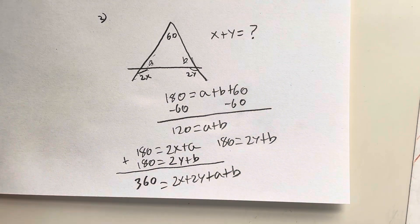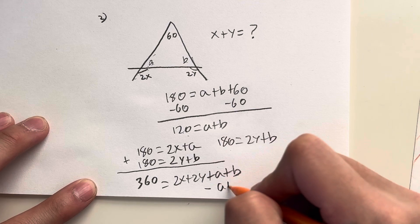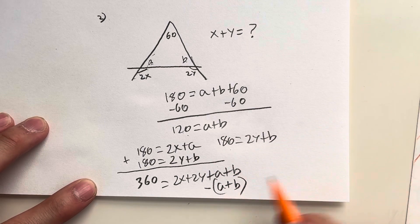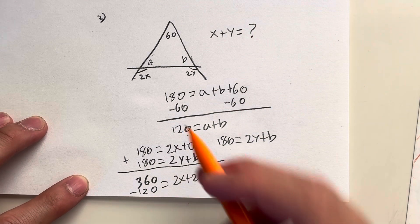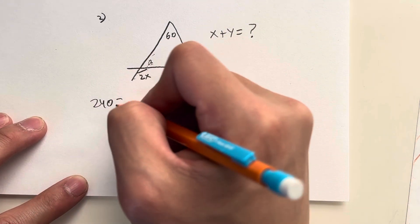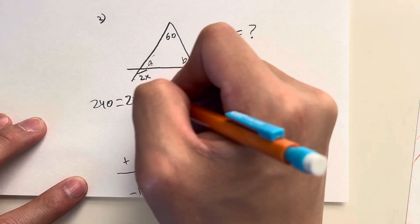Now what do I do from here? I know that A plus B is equal to 120. So I could just minus A plus B on both sides. And A plus B is just equal to the same thing as subtracting 120. 360 minus 120 will give me 240. So 240 is equal to, the A's and B's cancel out, 2x plus 2y.